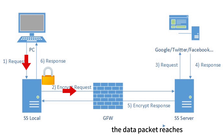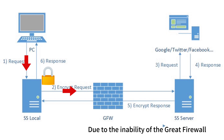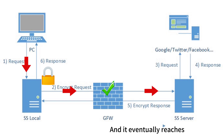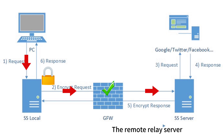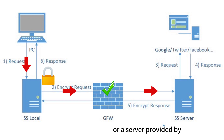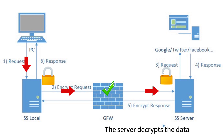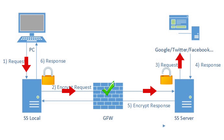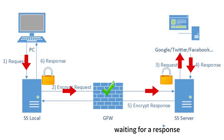Subsequently, after DNS resolution and passing through the backbone network — that is, the international gateway — due to the inability of the grid firewall to detect obvious patterns, it allows the traffic to pass, and it eventually reaches the remote relay server. The remote relay server can be the user's own VPS or a server provided by a Shadowsocks service provider. The server decrypts the data and forwards it to the target website, for example Google, waiting for a response.